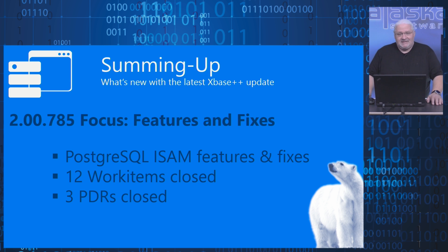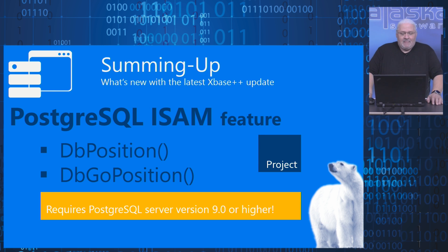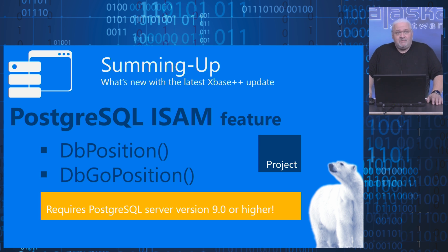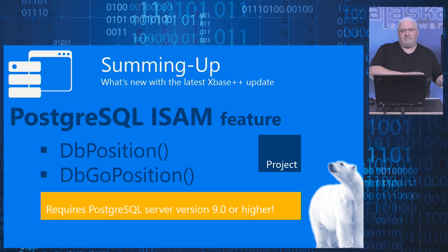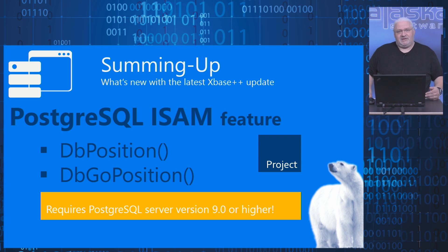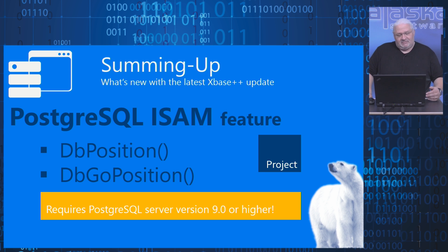Let's look at what we did with the PostgreSQL SQL engine. The PostgreSQL ISAM feature finally got the positional interface added. The positional interface is known to ISAM developers through the DBPosition and DBGoPosition functions. They are used for navigation — either physical navigation by record numbers, or logical navigation by the order established by indexes. Navigation is done using a percentage: going to 50% means going to the middle of the table, or the middle of the logical order. DBPosition returns the current position; DBGoPosition moves the record pointer to that position.